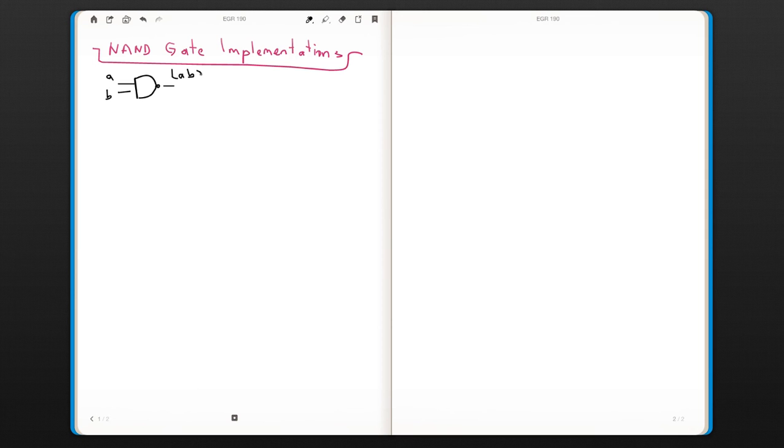So this is a NAND gate operation. You can also write this if you implement the complementation A naught or B naught.